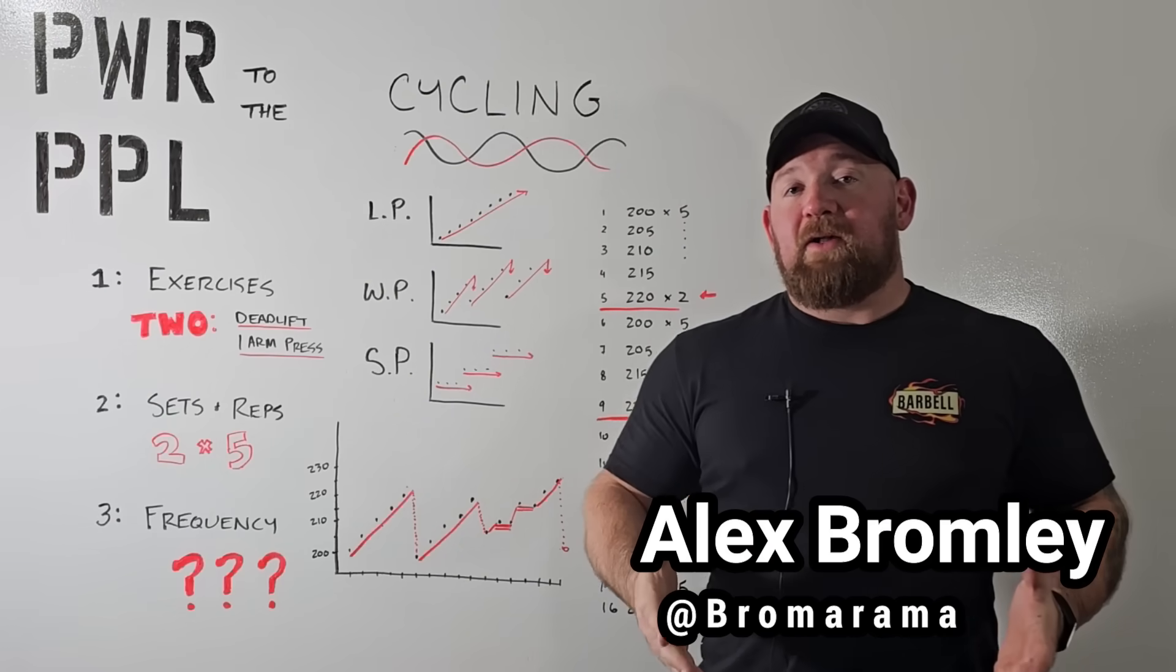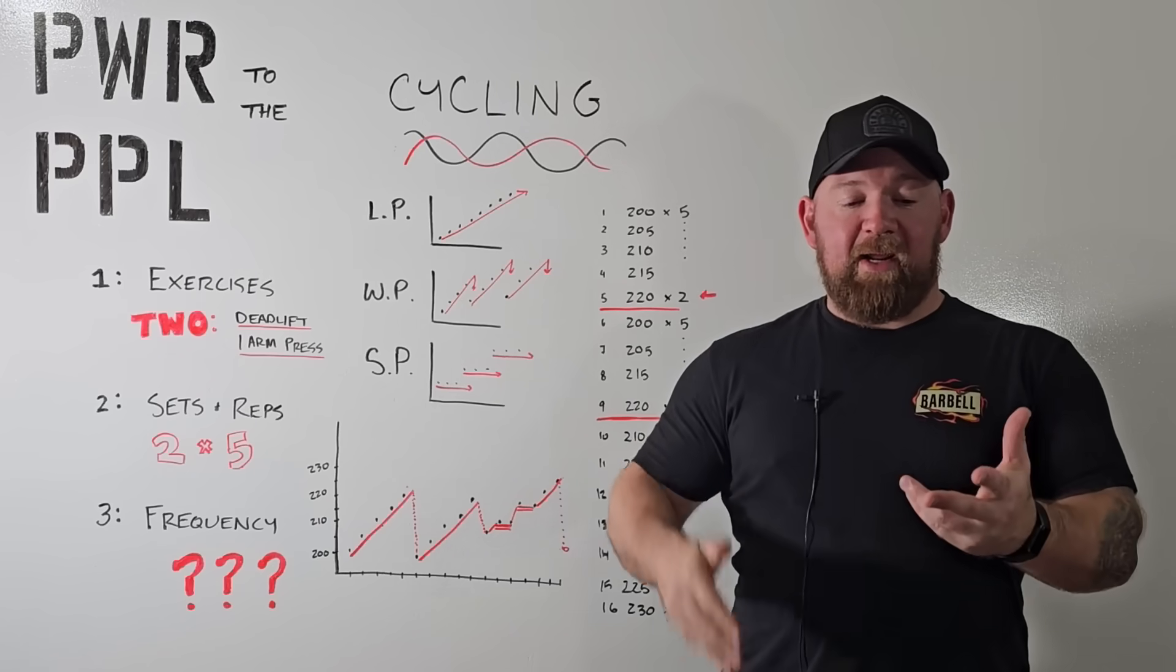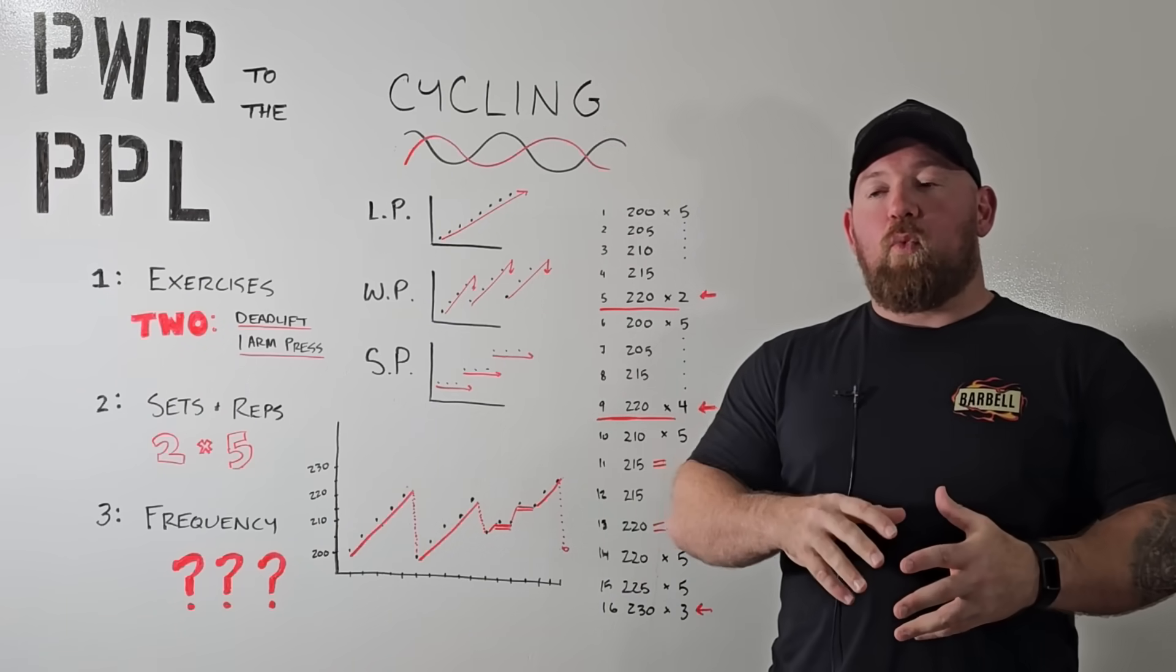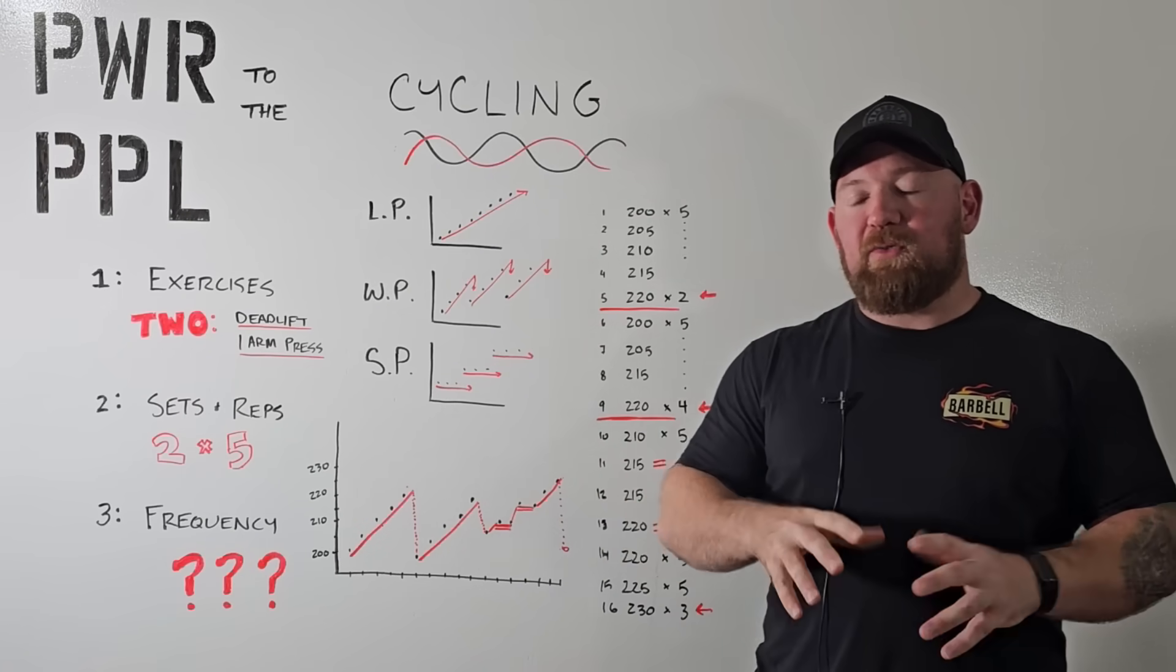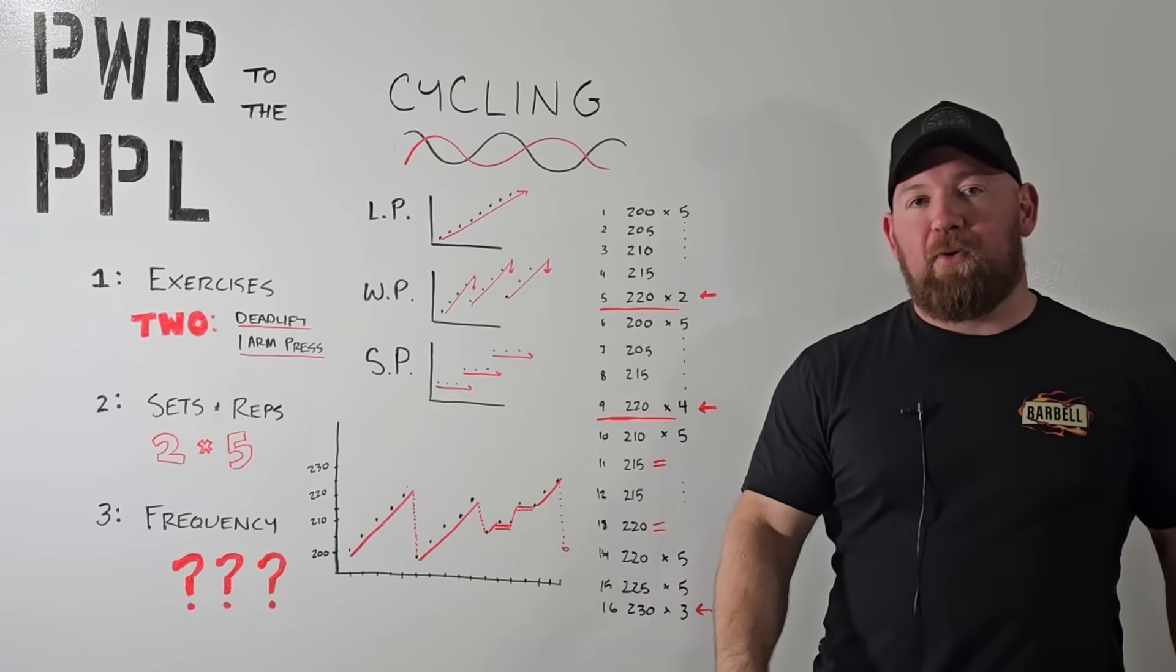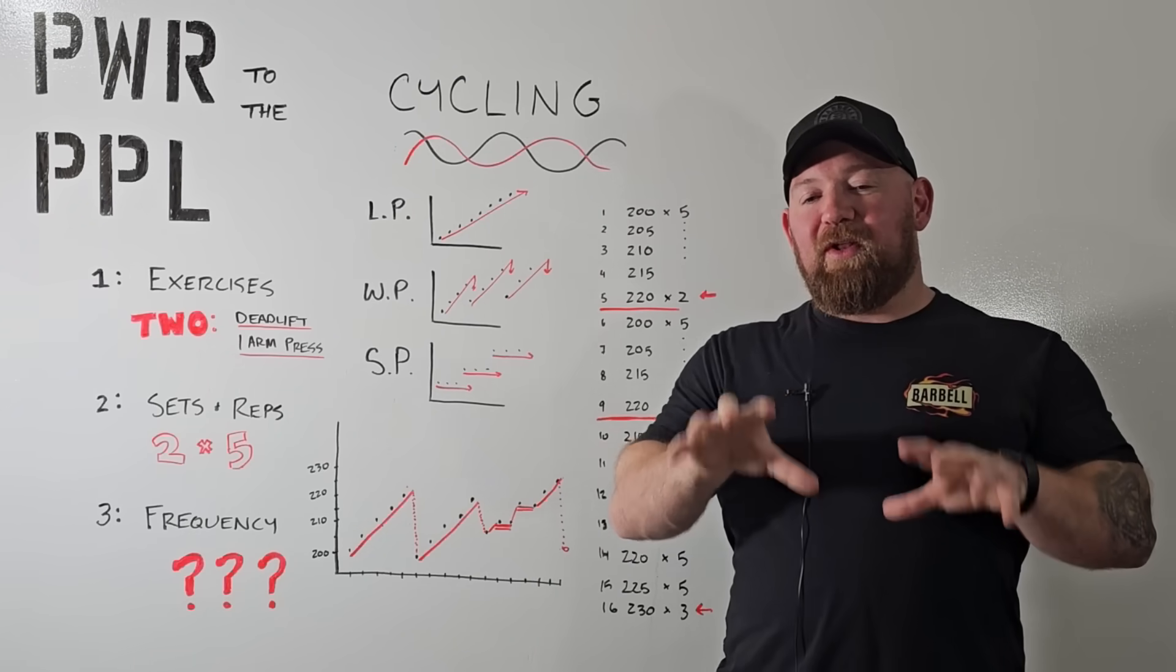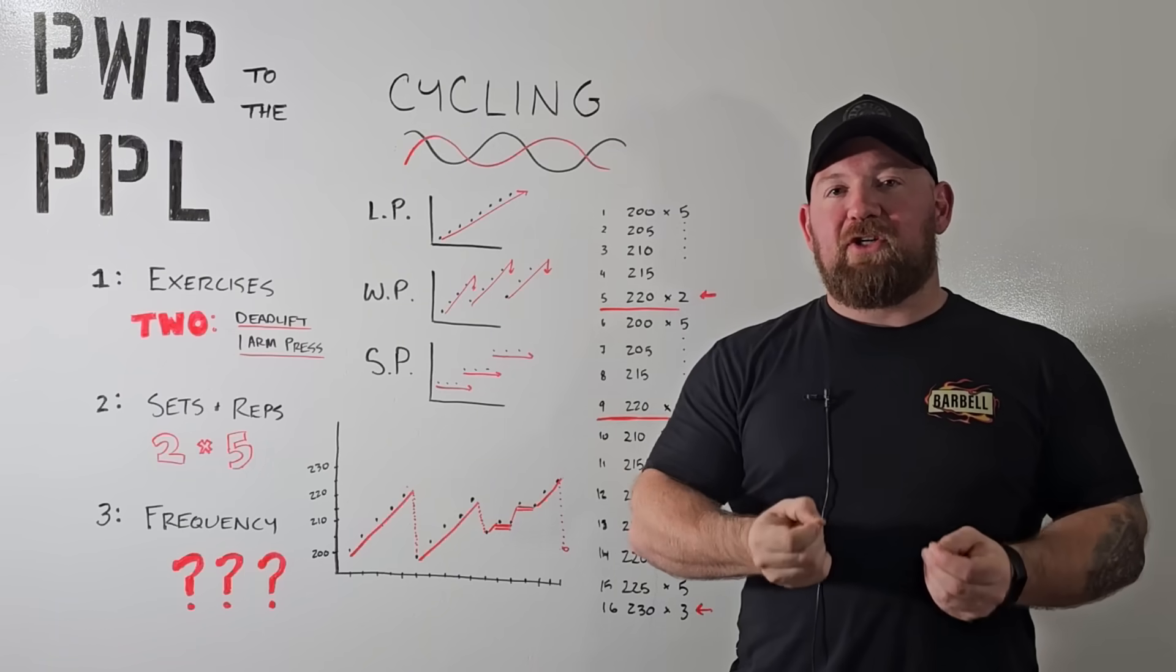Today we're going to talk about an underground strength legend. Pavel Tsatsouline has written over a dozen books on strength training, kettlebells, and conditioning. He's worked with some of the biggest names in the field, been on the Joe Rogan Experience, been around for decades. We're going to cover his book Power to the People because it really paints a clear, concise, minimalist version of strength training.